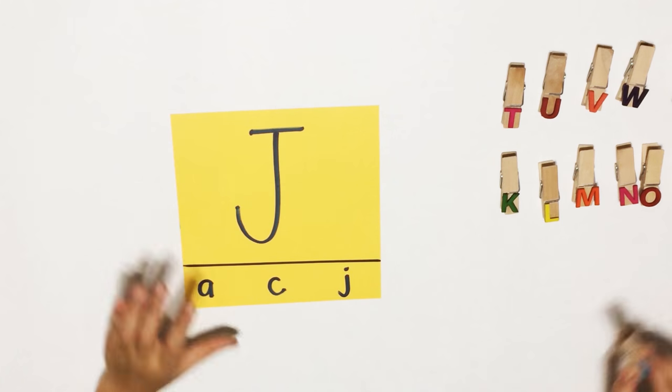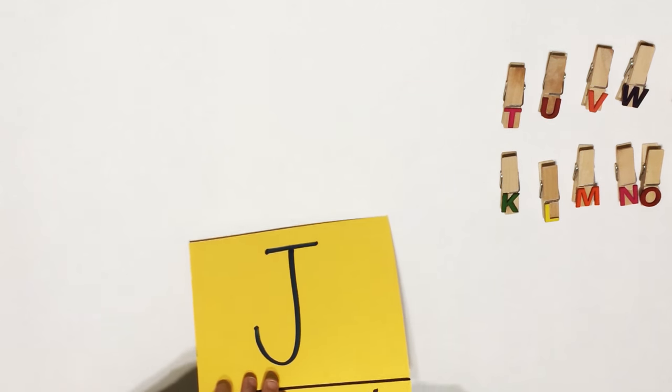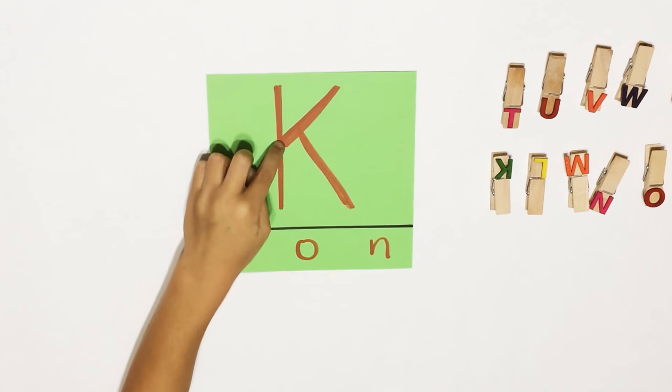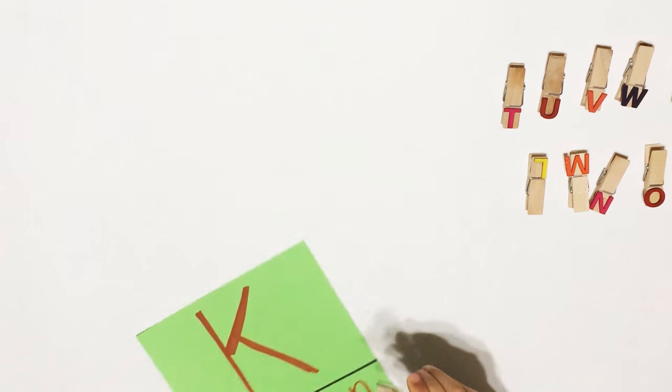J! Lowercase J! J for jacket. K, lowercase K, K for king.